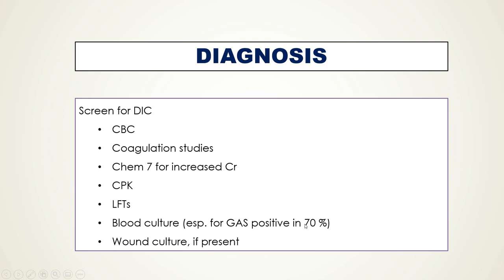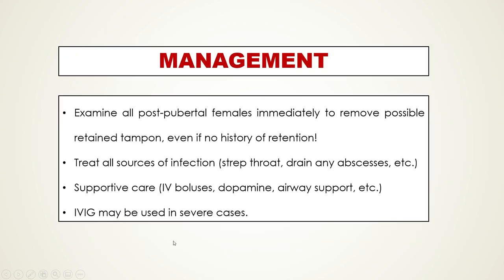We usually get a blood culture as well, because especially for group A strep, a large percentage of these patients will be bacteremic and have a positive blood culture. This is less likely in patients with tampons or a small abscess as the toxin source. If there is an abscess, we do an incision and drainage and get a culture to determine which antibiotic to use.